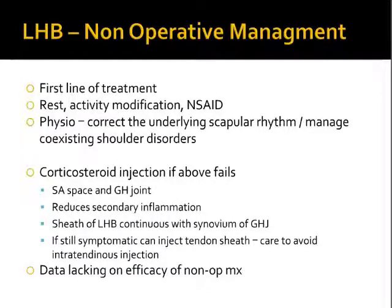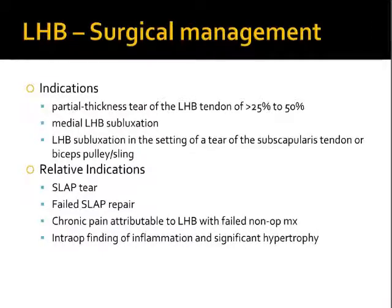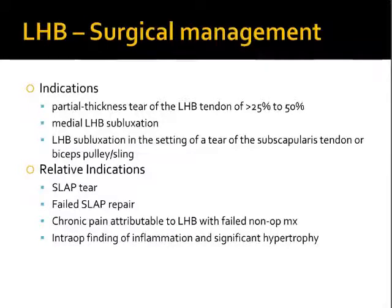Surgical management is indicated for patients with partial-thickness tears or subluxation — including subluxation in the setting of cuff tears. Relative indications include a SLAP tear along with a biceps problem, a failed SLAP repair, or chronic pain directly attributable to the long head of biceps. Additionally, if a shoulder arthroscopy is being carried out and there are intraoperative findings of inflammation or significant hypertrophy of the biceps tendon, something can be done about it at that stage.